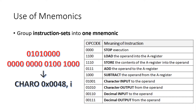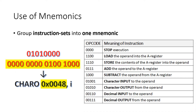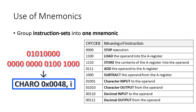We can use this notion of mnemonics to substitute the binary string 01010 with CHARO, and 000 with simply an 'I' for immediate mode addressing. We can also just write the operand as a hexadecimal value between the operation code and the addressing mode specifier. This is an example of an assembly instruction.